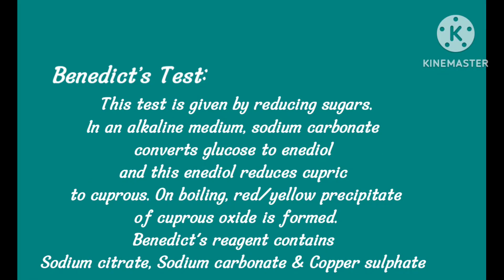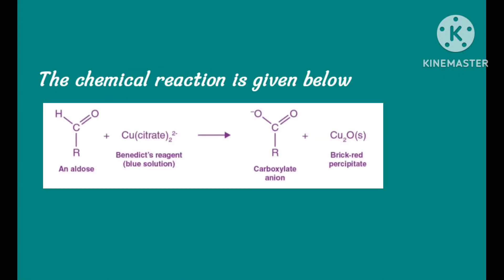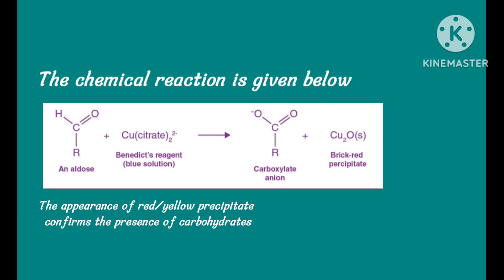Benedict's test: This test is given by reducing sugars. In an alkaline medium, sodium carbonate converts glucose to enediol, and this enediol reduces cupric to cuprous. On boiling, a red or yellow precipitate of cuprous oxide is formed. Benedict's reagent contains sodium citrate, sodium carbonate, and copper sulphate. Appearance of yellow or red precipitate confirms the presence of carbohydrates.